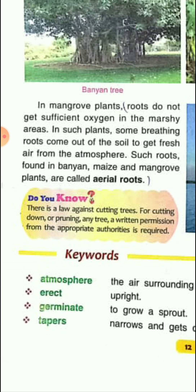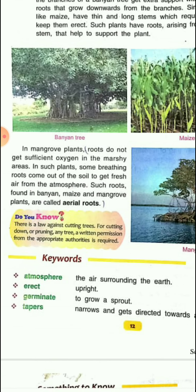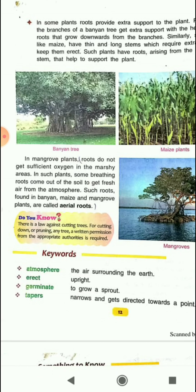There is a law against cutting down or pruning any tree. Written permission from an appropriate authority is required. So if you are going to cut a tree, you must first get government permission. You all know that trees are extremely important to provide us oxygen and to save our environment.